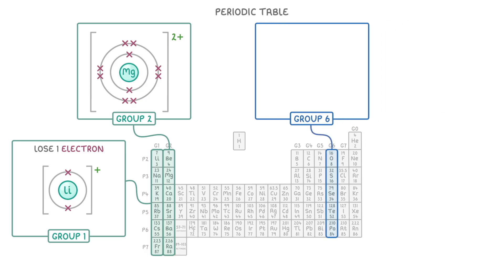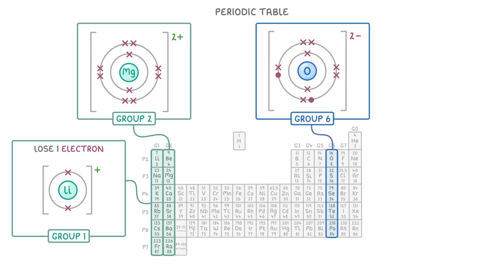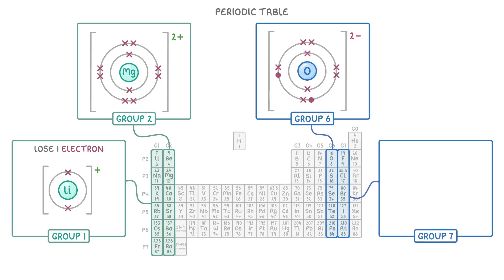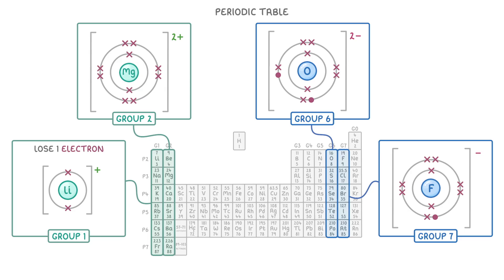And the same goes for group 6, which gains 2 electrons to become a 2- ion, and group 7, which has to gain 1 electron. However, the elements in groups 3, 4, and 5 would have to lose or gain 3 or 4 electrons, which would require loads of energy, and so this doesn't happen very often, and we generally don't see these elements as ions.